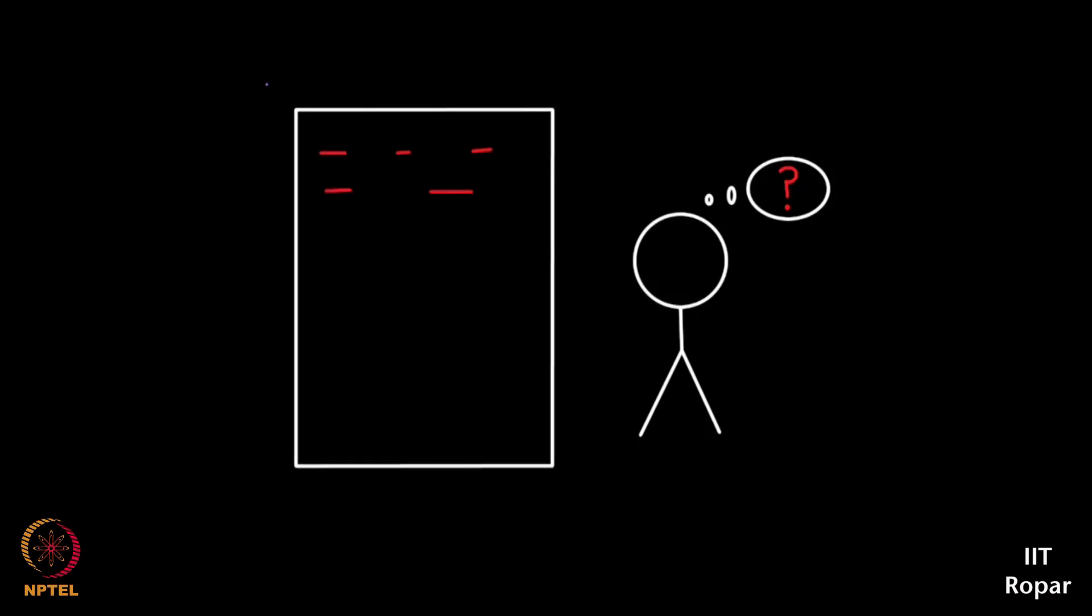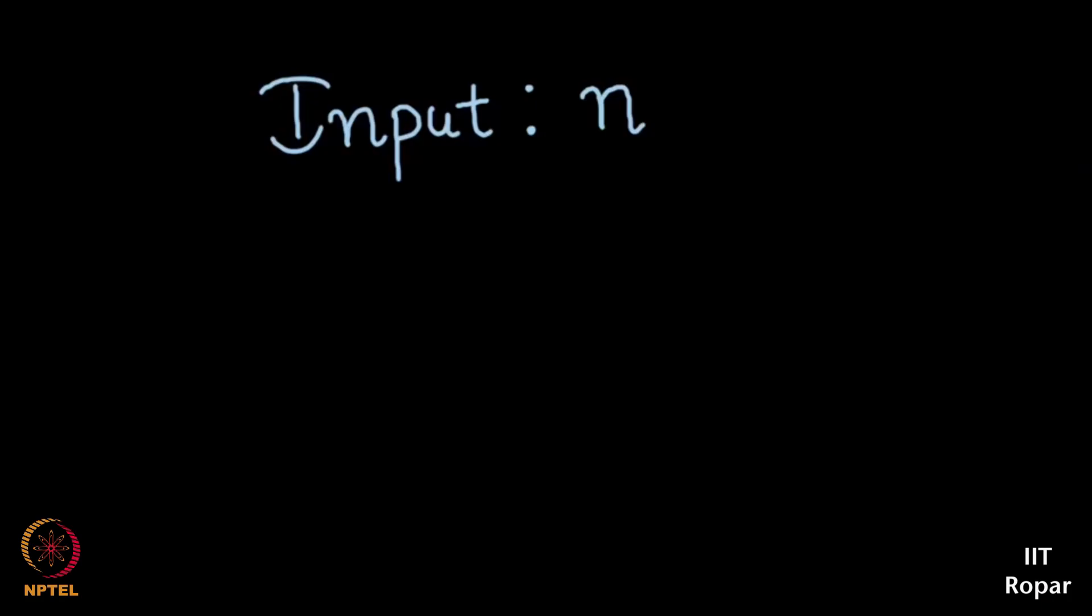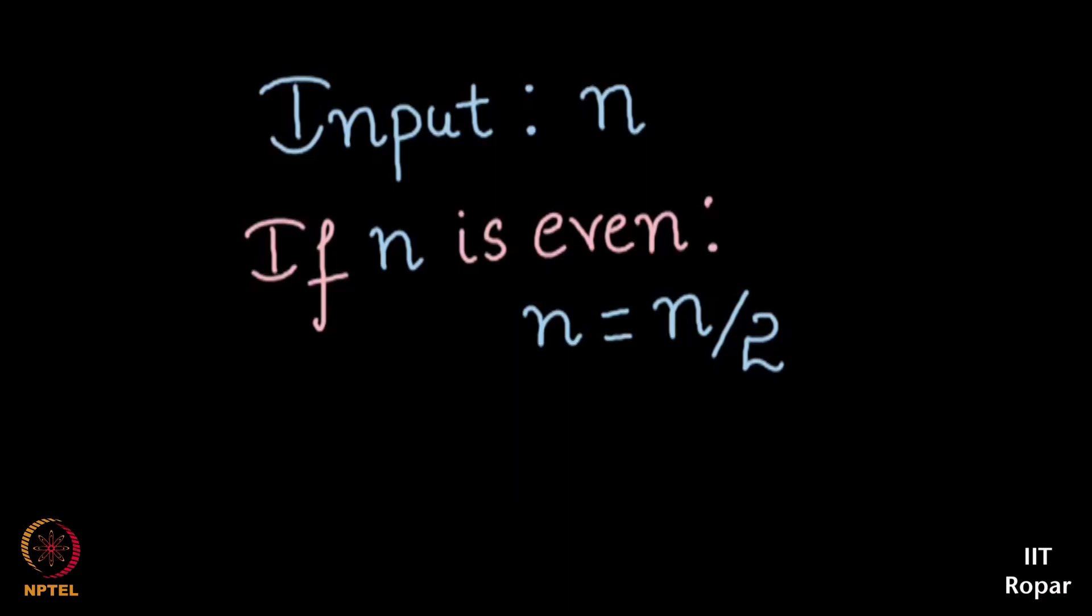The question is very simple. Input any number n. If the number n is even make it into half, if the number is 10 make it 5, if it's even make it by 2. If it is odd, let's say if it was 11, if it's odd shoot that number up by 3n plus 1 which is if n is 11 make it 3 into 11, 33 plus 1, 34. If it's even reduce it by half, if it's odd increase it by 3 times the number and add 1 to it.